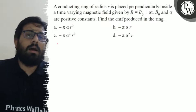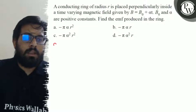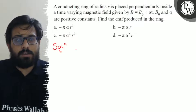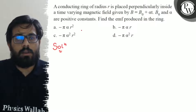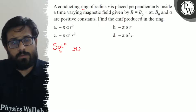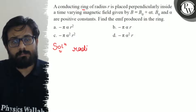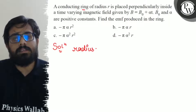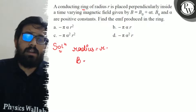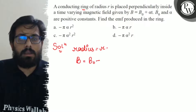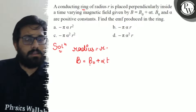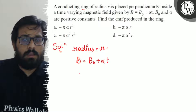So here in this question, the given data: the radius of the circular coil is r. We have a conducting ring having a radius r. The value of magnetic field is given as B₀ + αt, where B₀ and α are constants, and we have to calculate the value of EMF.